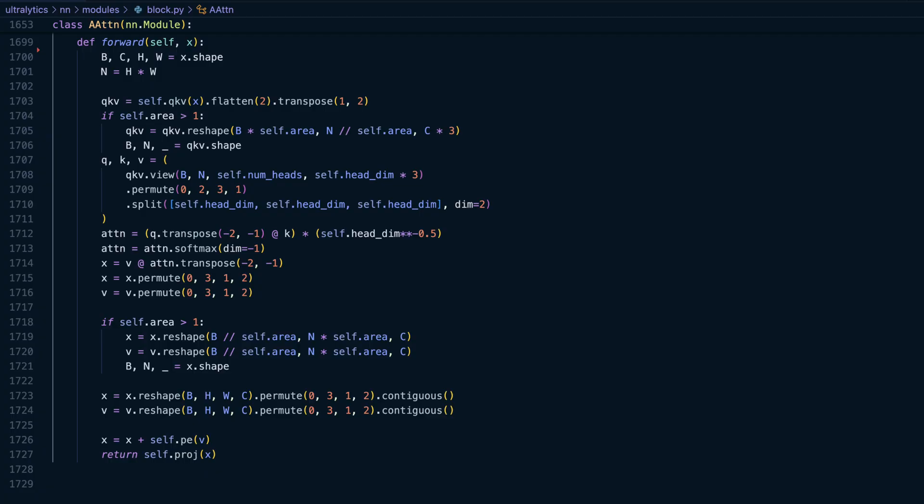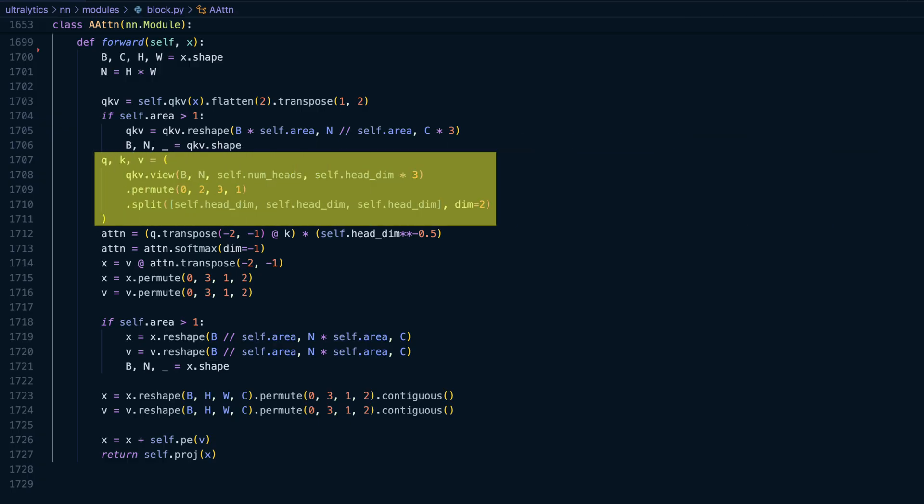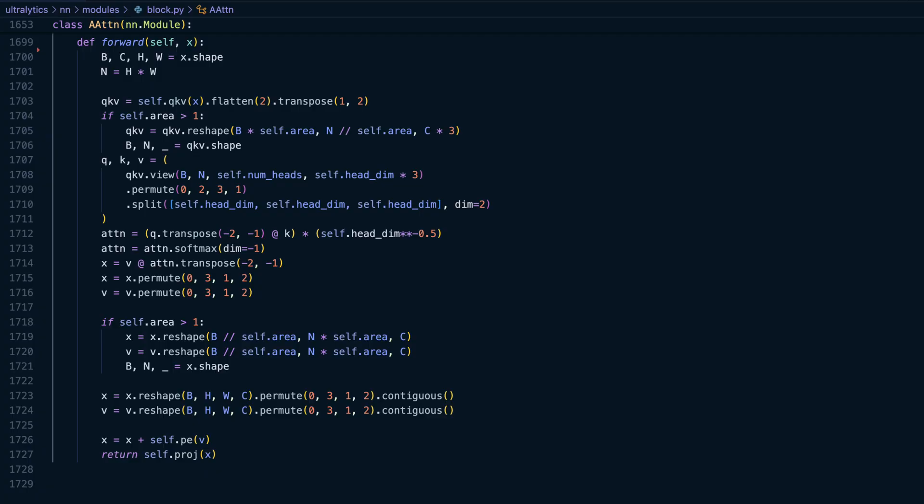Since our area value is 4, the QKV tensor will be reshaped, and the updated values for B and N will be used to generate the Q, K, and V tensors. Let's take a closer look at the transformations applied to the tensor in this step.